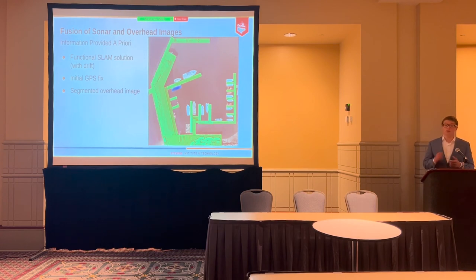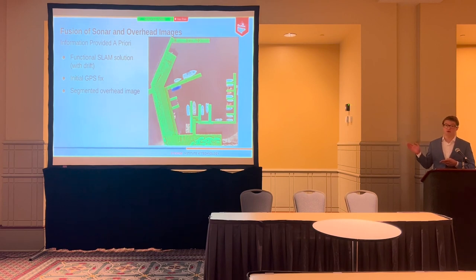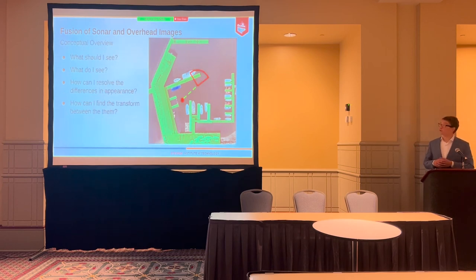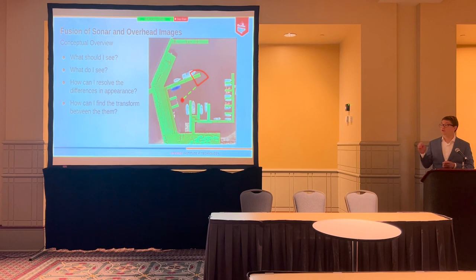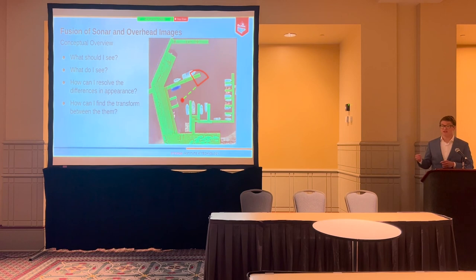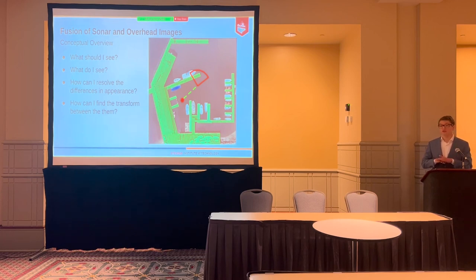So what do we provide to the vehicle a priori? We have a functional SLAM solution, albeit with drift, an initial GPS fix, and then this overhead image segmentation shown in green, which identifies the structure that's going to be useful as an aid to navigation. Conceptually, we're going to start at this red dot, move along some trajectory to our current state, ask what we should see in terms of the green segmentation, compare that to what we actually see in the sonar imagery, resolve the differences in appearance, and then find the transformation between those two data structures.